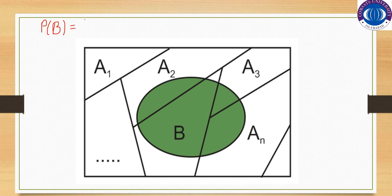The total probability formula is: the summation of probability of Ai into probability of B given Ai, where i represents the parts — A1, A2, and so on.